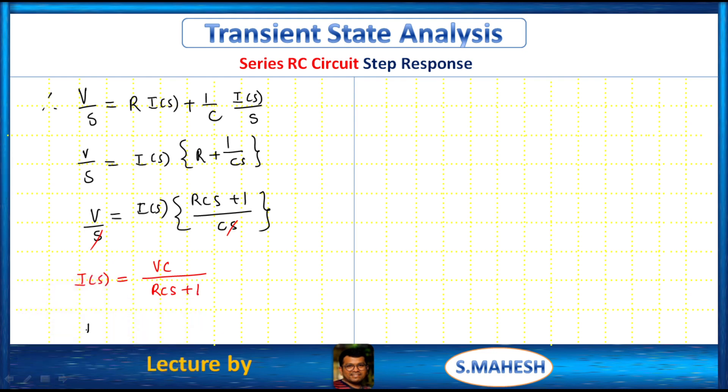So from this, let us cancel. I of s which is equals to we are having what, V by R by s plus 1 by R C.